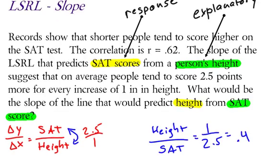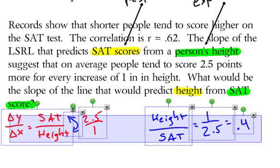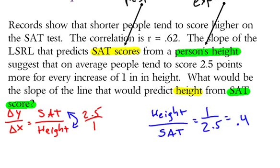1 divided by 2.5 is 0.4. So our new slope would end up being 0.4. But we shouldn't just stop right there. That would not be good enough. We would want to interpret this slope and give it some context. So let's go ahead and type this out.